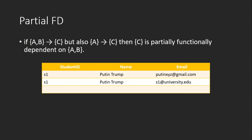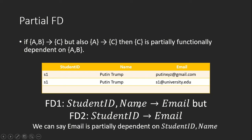Partial functional dependency: if a set of attributes AB determines C, but A alone can also determine C, then C is partially dependent on A. For example, student ID and name together can identify email, but student ID alone is enough to identify email. So email is only dependent on a partial part of the whole determinant — student ID — making this a partial functional dependency.